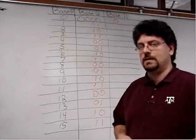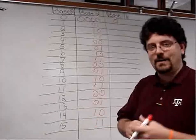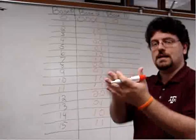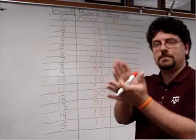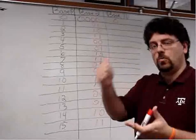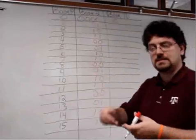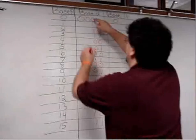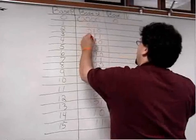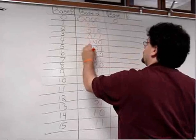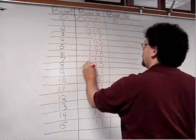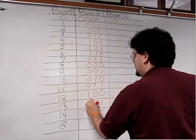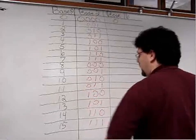2 plus 2 is 4. Now you have: rest, rest, rest, rest, clap, clap, clap, clap — and that repeats. Then 4 plus 4 is 8, so now we have eight rests followed by eight claps, and that pattern repeats as well.